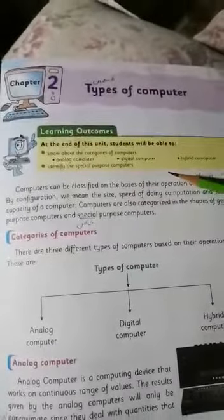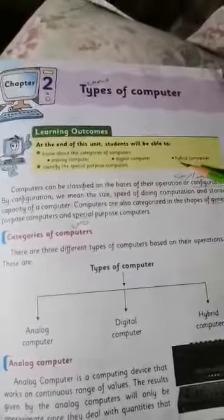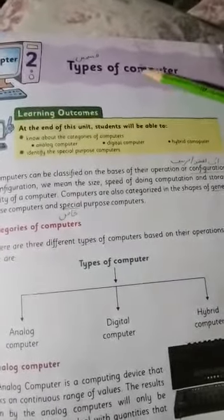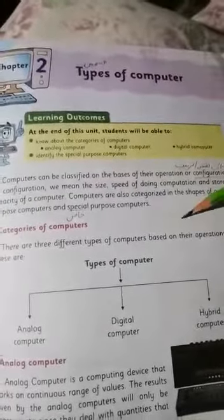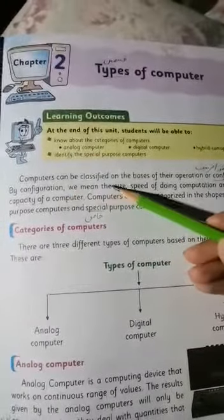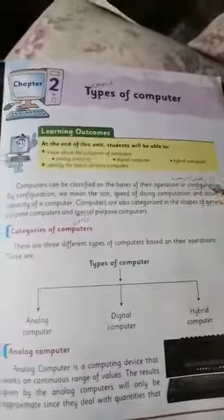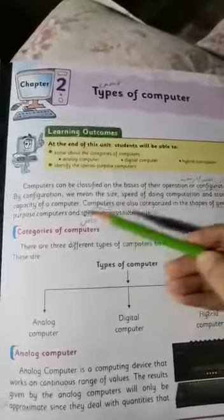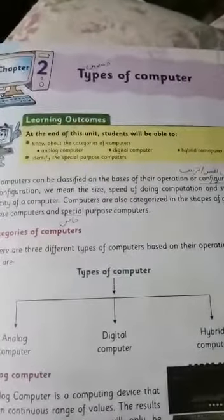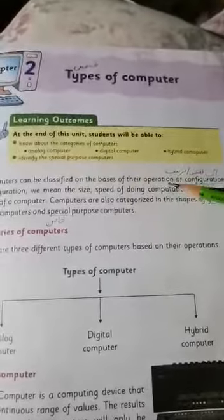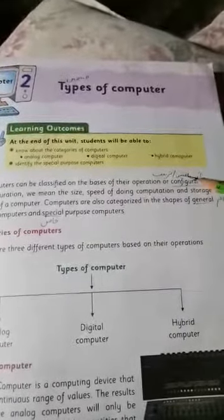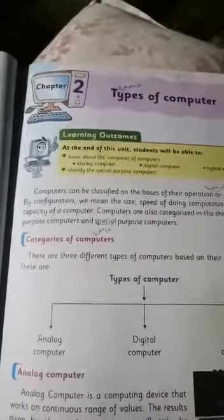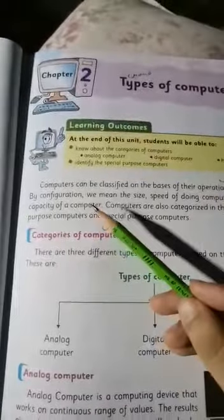Up to here, your first chapter questions are complete. After this, we will do the reading and explanation of chapter number two. Today we will cover half of the chapter. The chapter's name is 'Types of Computer' — how many types of computers are there. Computers can be classified on the basis of their operations or configuration. By configuration we mean the size, speed of doing computation, and storage capacity of a computer.